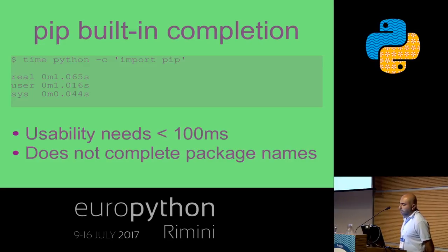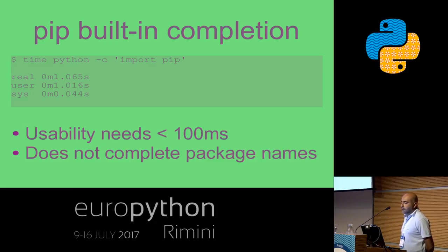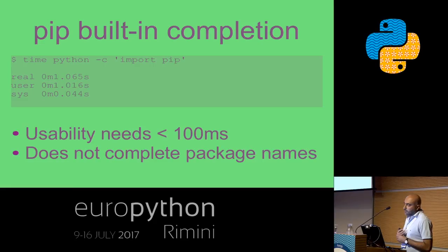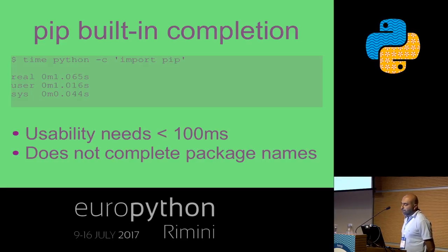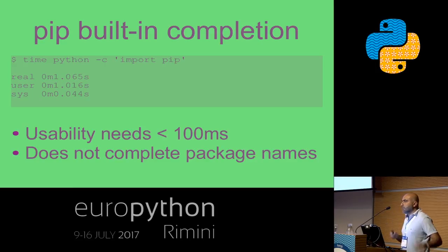Let's see how the built-in pip performs. When you press tab, it imports pip and then calls it. Just importing the package on my laptop takes one second — way above the 100 millisecond usability benchmark. Anything under 50 milliseconds people can't perceive — people can't perceive more than 24-25 frames per second. But anything more than 100-150 milliseconds, you're going to feel that jittery lag. Also, the built-in pip completion only completes subcommands — it won't complete the names of packages. So we're going to take it to the next level.